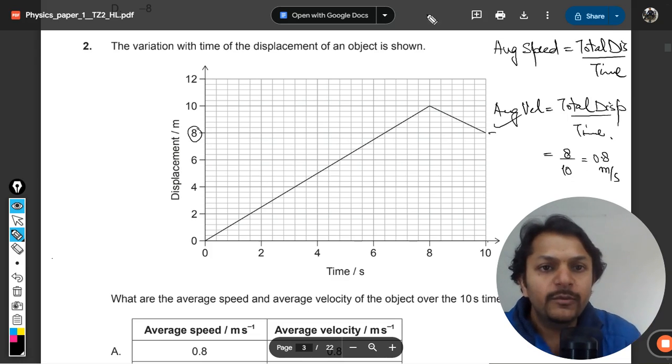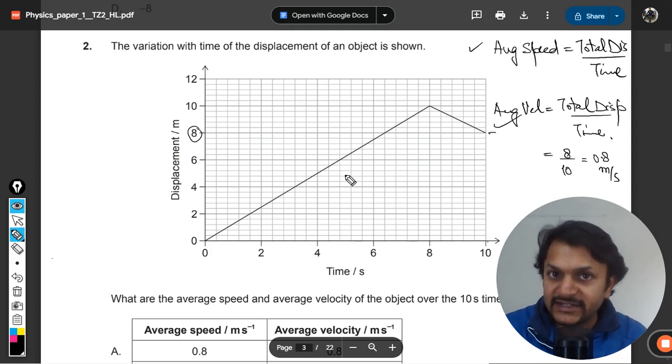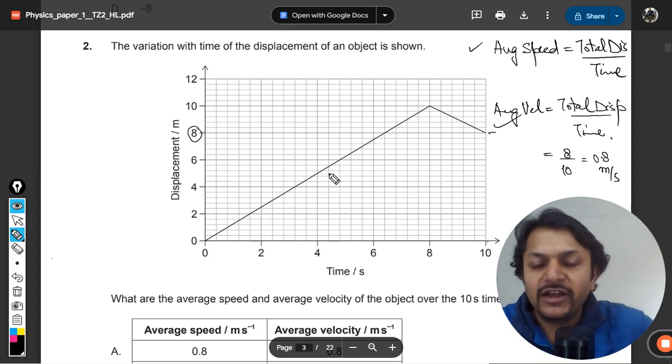Now for average speed, you have to find the total distance. Distance is like the petrol you're spending while traveling. If you go to the market and come back home, you're not gaining petrol back again.